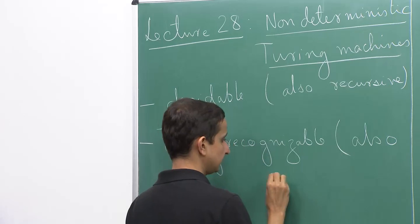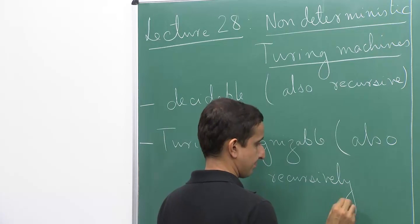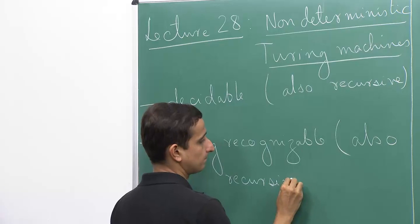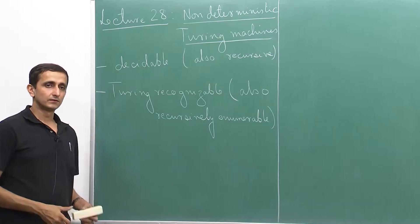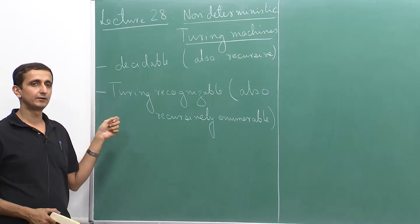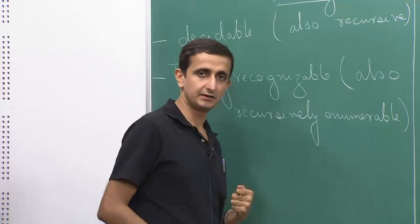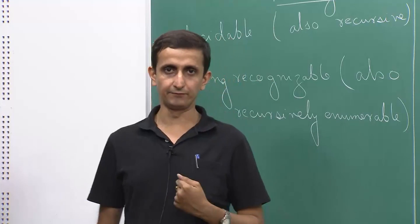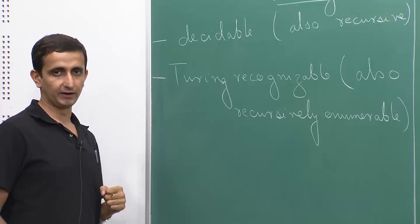Turing recognizable languages are also known as recursively enumerable languages. A language is Turing recognizable if there is a Turing machine that accepts it — for strings in the language, the Turing machine halts and accepts; for strings outside, the machine can either halt and reject or go into an infinite loop. Decidable languages are a subset of Turing recognizable languages.